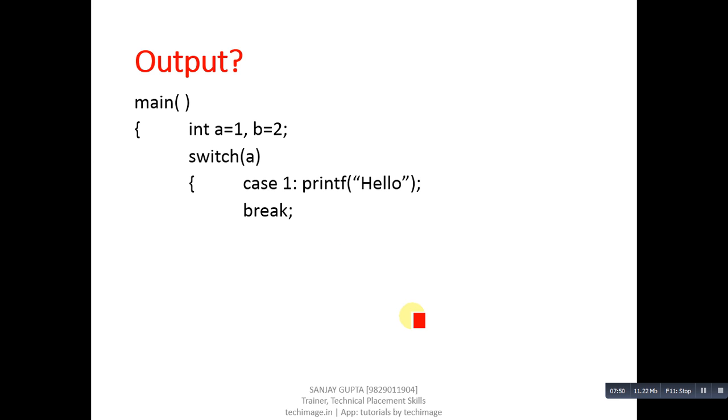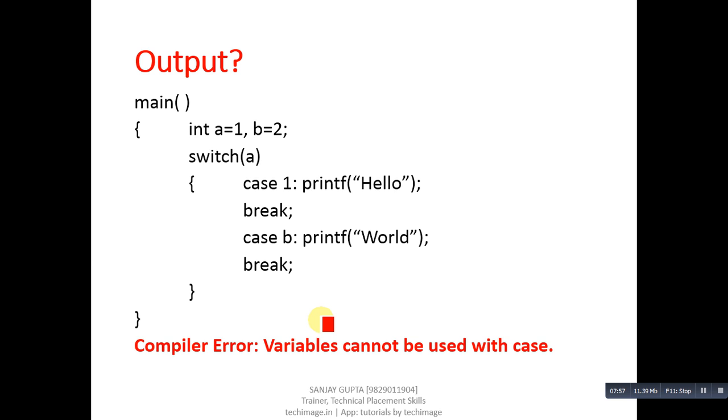This is another code segment. You have to identify output of this code segment. It will also show an error. Variable cannot be used with case. You can see that here b is used with case keyword. This is a rule for switch statement: we can only use constant values with case keyword. We cannot use variables with case keyword. If we do so, then compiler will generate a syntax error. You have to take care of it.